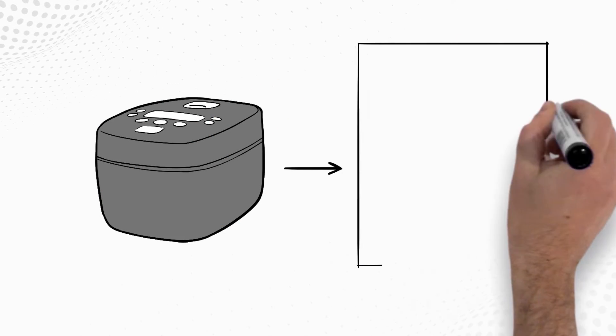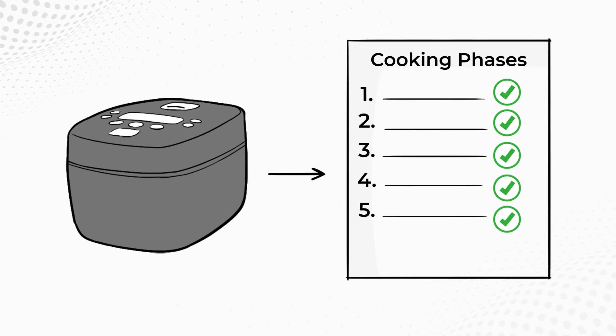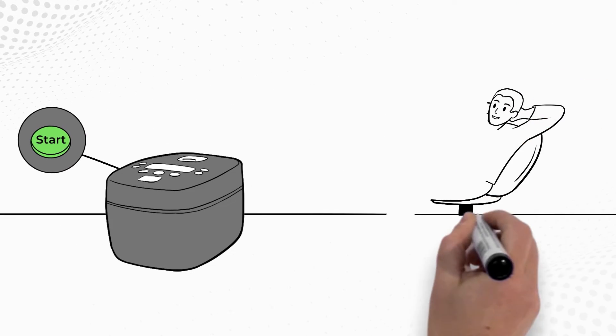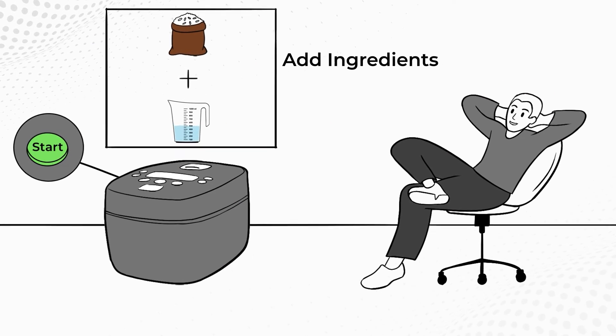With its precise digital control, an induction heating rice cooker seamlessly handles each phase of cooking on its own. You simply add ingredients and press start, then sit back and let perfect rice cook itself while you relax.